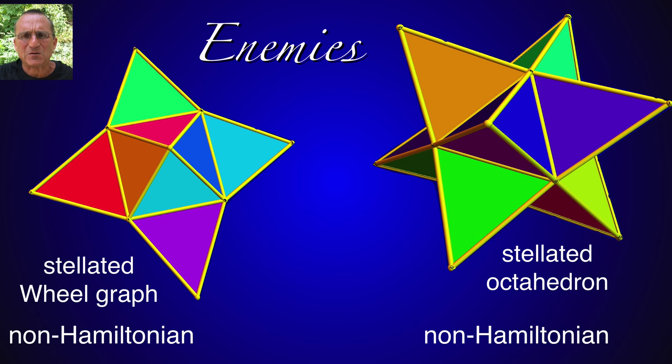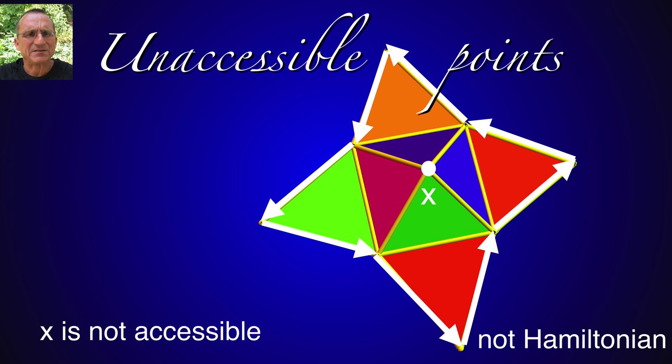So here are the enemies of Hamiltonian property. Two examples show this. Stellated wheel graph to the left. Interior point is not accessible. To the right we see a stellated octahedron. It's also not Hamiltonian.